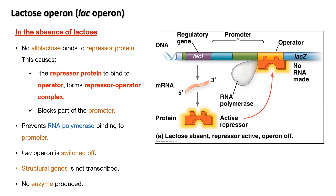In the absence of lactose, no allolactose binds to the repressor protein. This causes the repressor protein to bind to the operator, forming the repressor-operator complex, which blocks part of the promoter and prevents RNA polymerase from binding to it. The lac operon is switched off. No structural gene is transcribed and therefore no enzyme is produced.